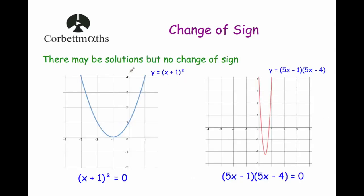There may also be solutions without a change of sign. For example, with (x plus 1) squared equals 0, the graph touches the x-axis at minus 1 and goes back up — if you choose minus 1.1 and 0.9, both give positive values even though there is a solution. Additionally, if two solutions are very close together and you choose boundary values too far apart — for example y equals 5x(5x minus 1)(5x minus 4) has solutions at 0.2 and 0.8 — putting in x equals 0 and x equals 1 gives positive values for both, missing both solutions.